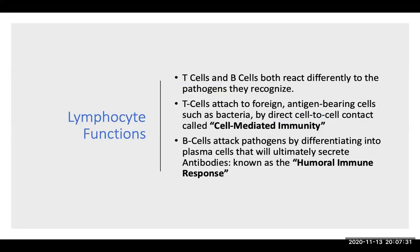Your B and T cells will both react differently to pathogens they recognize. T cells will attach to foreign antigen-bearing cells such as bacteria by direct cell-to-cell contact, called cell-mediated immunity. B cells will attack pathogens by differentiating into plasma cells that ultimately secrete antibodies, and this is known as the humoral immune response.